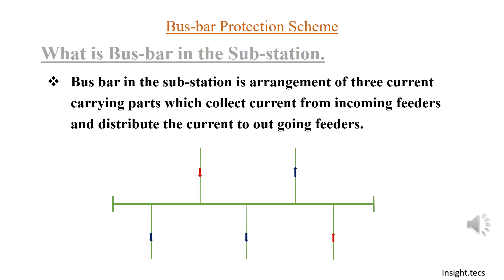Here the simplified diagram is shown. Red represents the incoming current and blue is the outgoing current. This is the junction point where incoming feeders collect the current and it is distributed to the outgoing feeders. As you can see, this is the busbar.